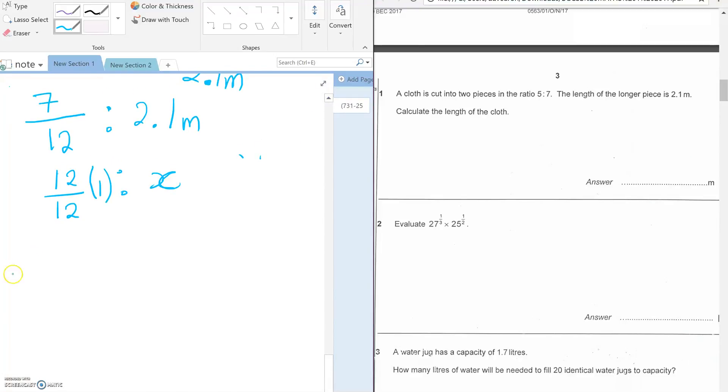If you cross multiply, you're gonna have 7x over 12 is equal to 2.1. So then 7x, if you multiply by 12 on both sides, you're gonna have 2.1 times 12, then you divide by 7 on both sides.